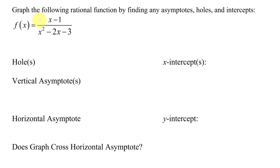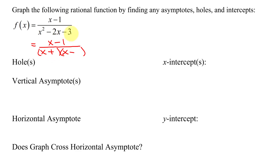The first thing we have to do is decide if we can simplify our function, so we need to factor the numerator and the denominator. The numerator is in simplest form, so I leave it alone. Looking at the denominator, I have a trinomial with a leading coefficient of 1 on x squared. Since I just have 1x squared, my first terms in parentheses have to be x and x. My two numbers multiply to a negative, so I have opposite signs. They multiply to negative 3 and add to negative 2, and since they add to a negative number, the bigger number has to be negative.